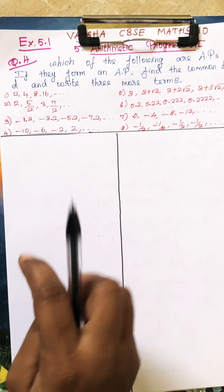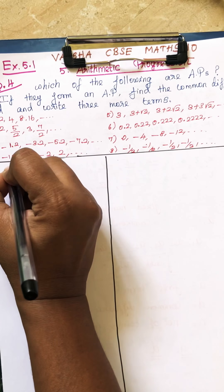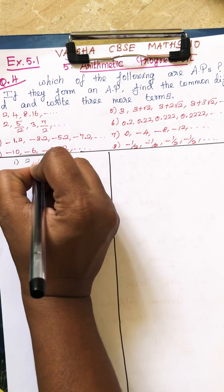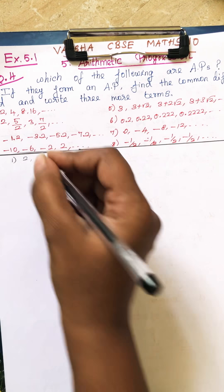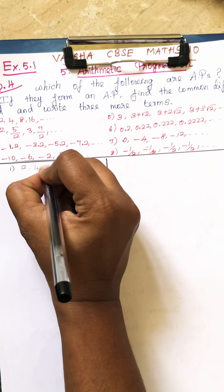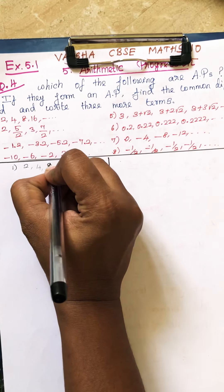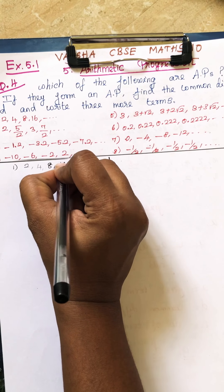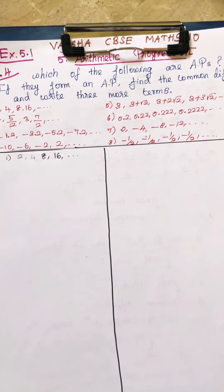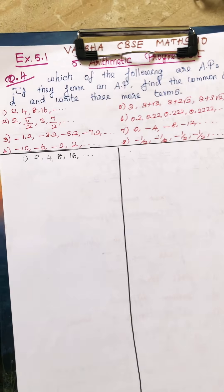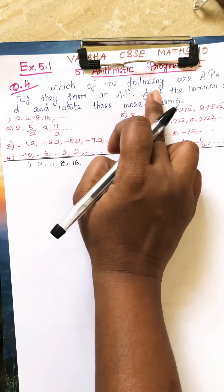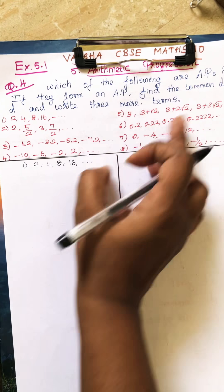So what is your first sum? The first sum is very easy: 2, 4, 8, 16. First question — which of the followings are AP?